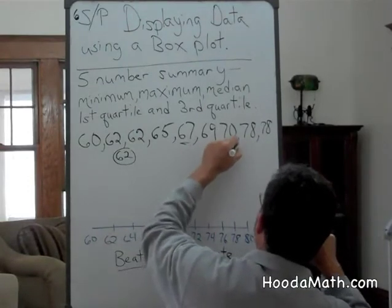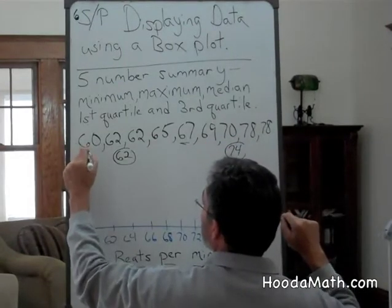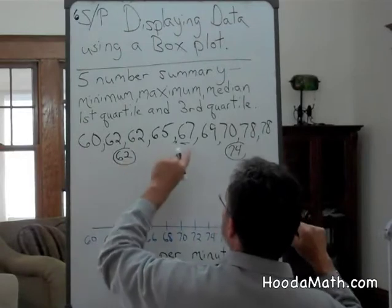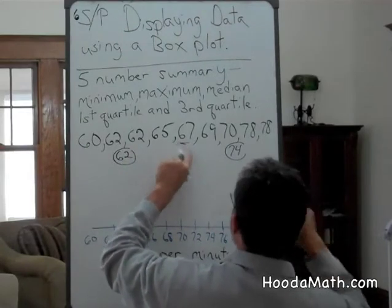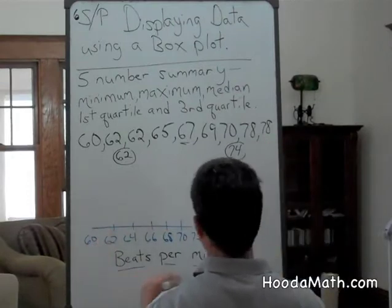is 74. So that's our minimum. Our first quartile, our median, our third quartile, and 78 is our maximum.